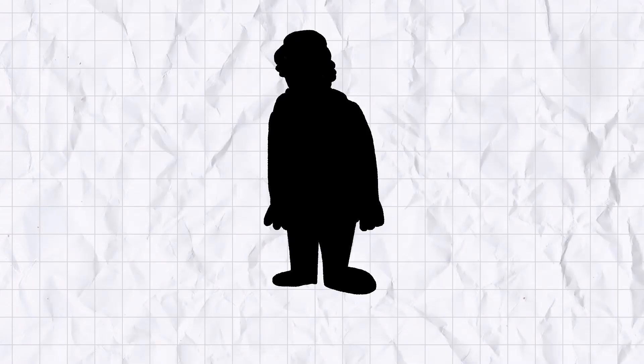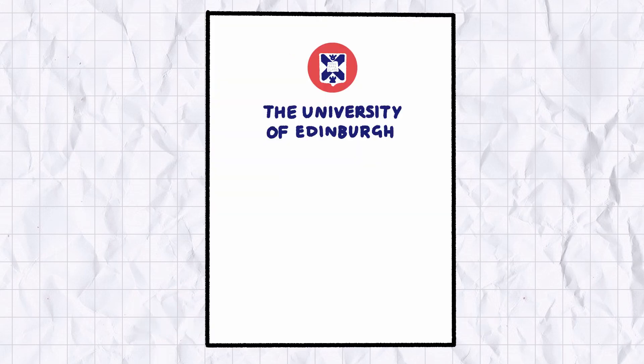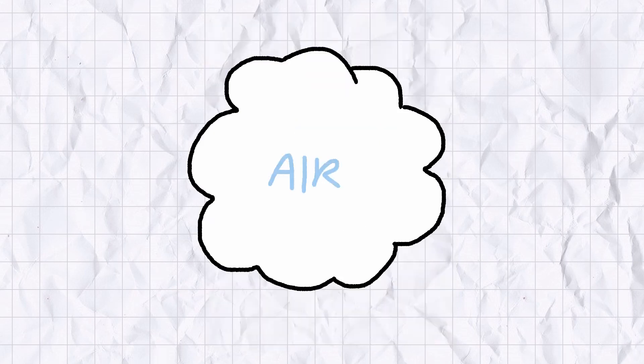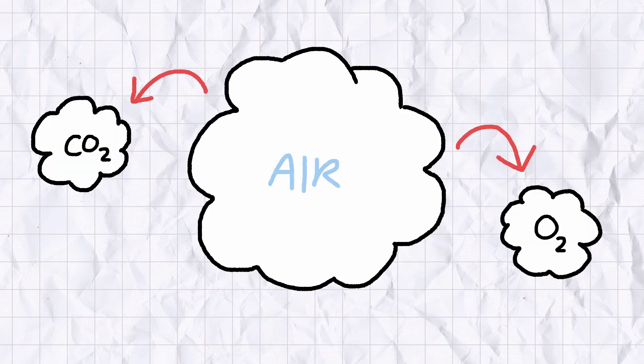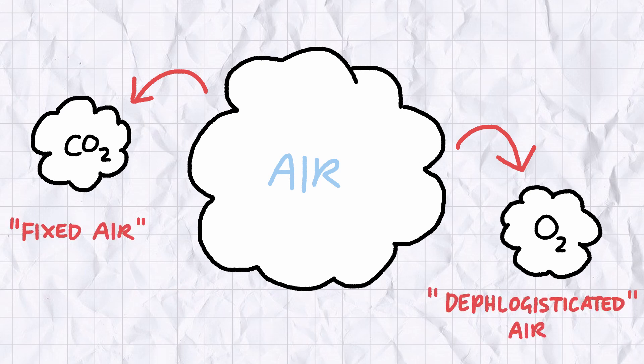The discovery of nitrogen gas is attributed to the Scottish scientist Daniel Rutherford. As part of his dissertation at the University of Edinburgh, Rutherford was investigating the chemical composition of the Earth's atmosphere. He noticed that air took on unusual properties when carbon dioxide and oxygen were removed from it, substances that were known back then as fixed air and deflogisticated air, respectively.